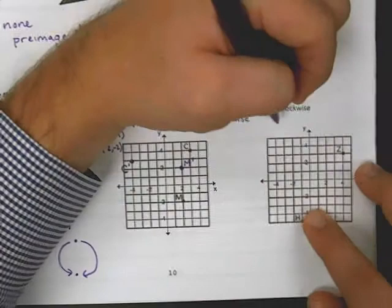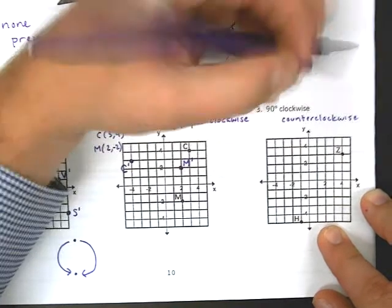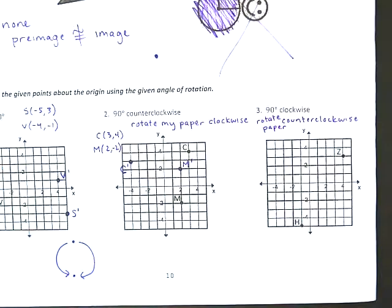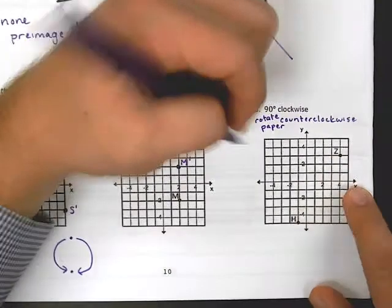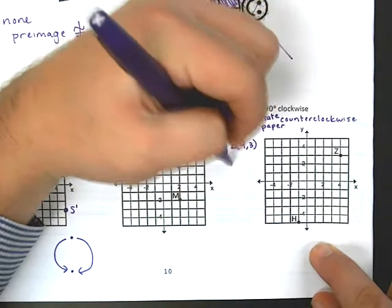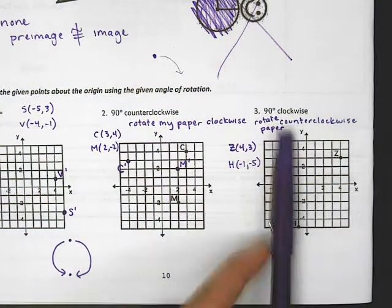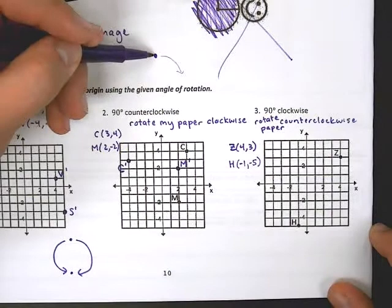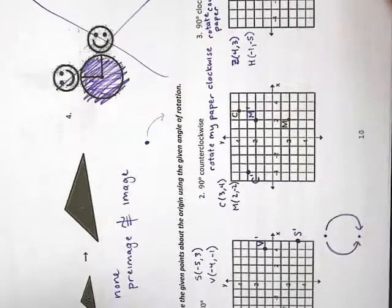90 degrees clockwise means I'm going to go counterclockwise when I rotate my paper. So, rotate paper counterclockwise. Other things I have to remember this time, get our points before we start turning. So, this point Z is at 4, 3 and H is at negative 1, negative 5. And now again, because I want to rotate clockwise, I'm going to rotate my paper the opposite, counterclockwise. So, that means, if I think about my dot here, now I'm going backwards. So, I need to do the same thing with my paper. I'm going to go to the left, one turn, 90 degrees.